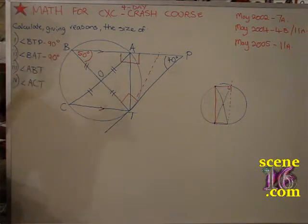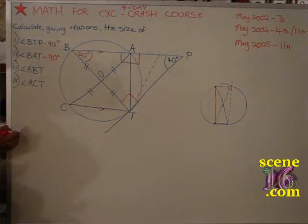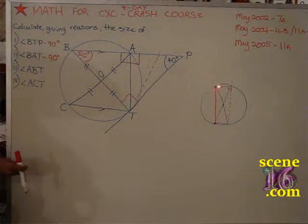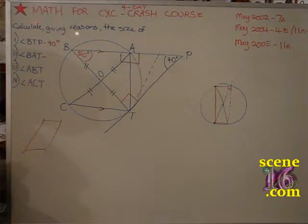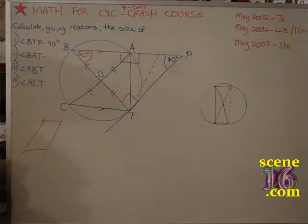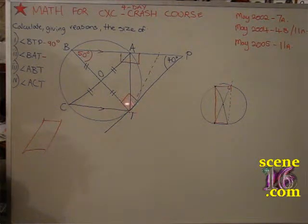I think it must have some marker — the four parallel lines, a square, a rectangle. You're saying that if you have two parallel lines one and two, and another two parallel lines one and two, then you must get a 90-degree angle. The question says to calculate giving reasons — calculate giving a reason that BAT is 90 degrees. We give a valid enough reason for BTP being 90 because T was a tangent to the circle at this point. So that means that this has to be 90 degrees.